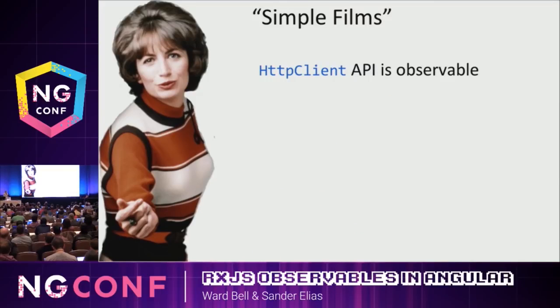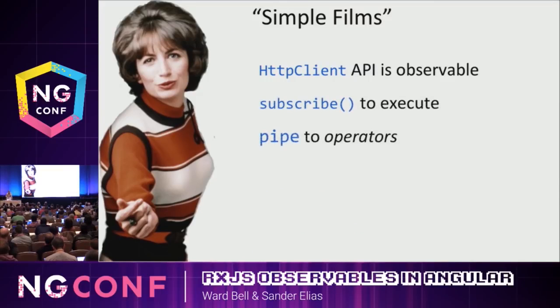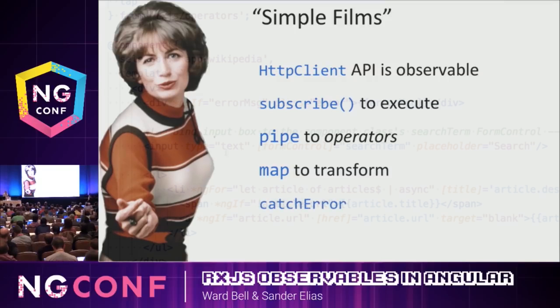We've learned that HTTP client is an API that is observable. We learned to subscribe to execute. We've learned about piping operators. We've learned that map will help you transform one value or a bag of something into what it is that you actually want.